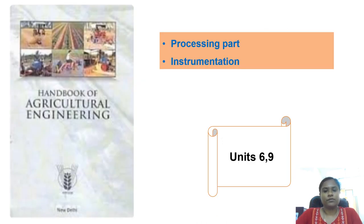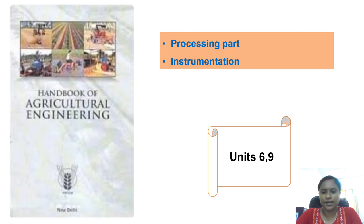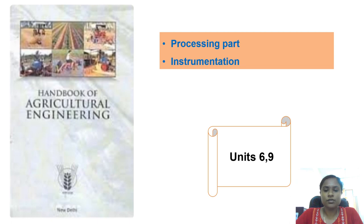To cover Unit 6 and Unit 9, you can refer to the 'Handbook of Agricultural Engineering'. From this book you can cover the processing part under Unit 6, the instrumentation part, the aquaculture part, and the seed processing part, which is also included in your syllabus.